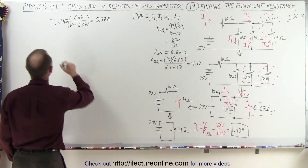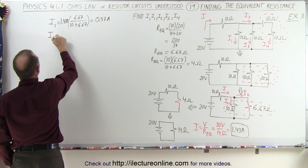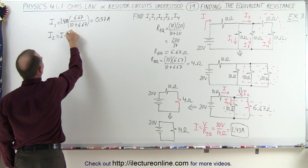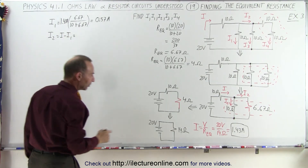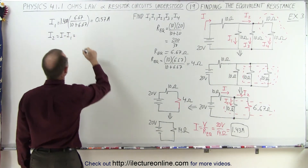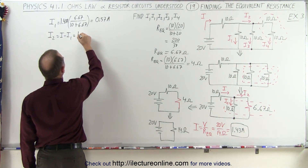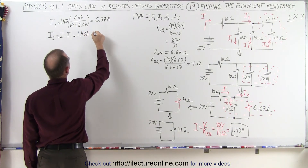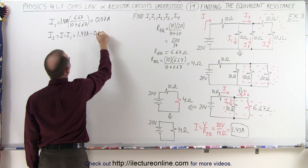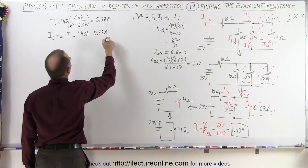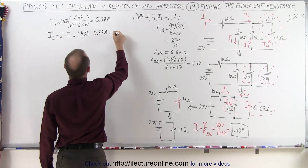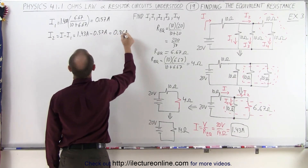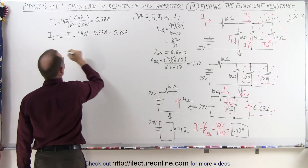To find I2, we can simply subtract I1 from I. So I2 equals I minus I1, which is 1.43 amps minus 0.57 amps, leaving us with 0.86 amps for I2.